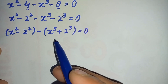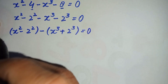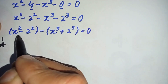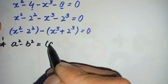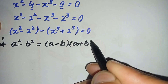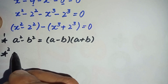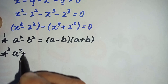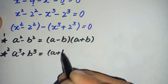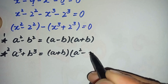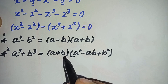Here we will use two different algebraic identities. Formula one: a squared minus b squared equals (a minus b)(a plus b). Formula two: a cubed plus b cubed equals (a plus b)(a squared minus ab plus b squared).